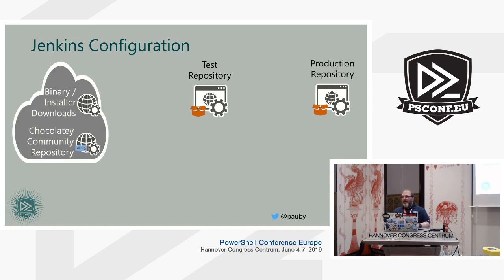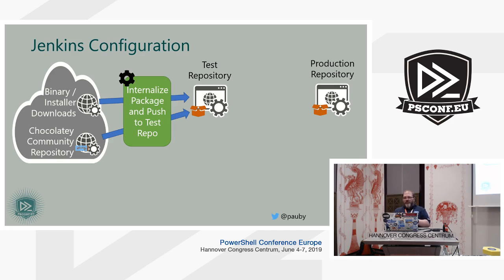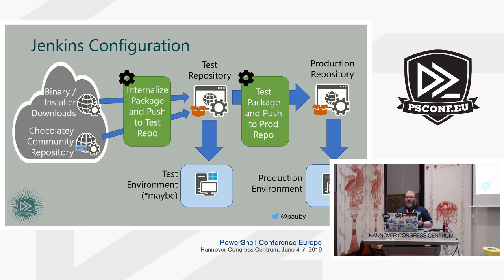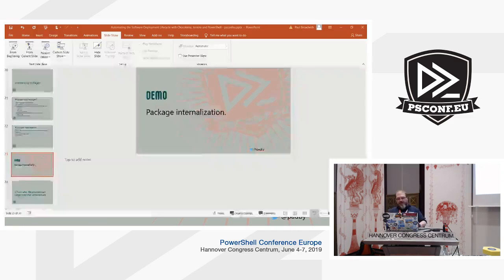This is the configuration we've set up based on the recommended architecture. We've got the binary installer download locations and the Chocolatey Community Repository — we take packages and installers from there. We then run it through the job called 'internalize package and push to test repo', which does exactly what it says. Once it's in the test repository, another job starts to test the package. We're running PESTER tests and installing and uninstalling it on a virtual machine. That then pushes to the production repository, from where you can deploy to your thousand nodes.